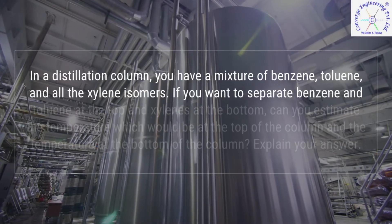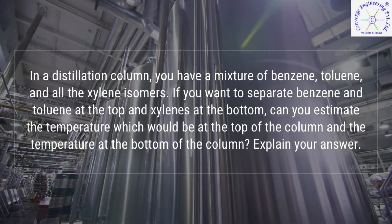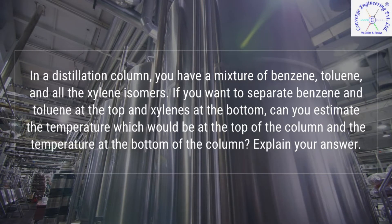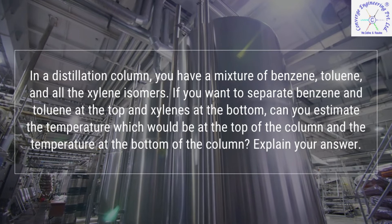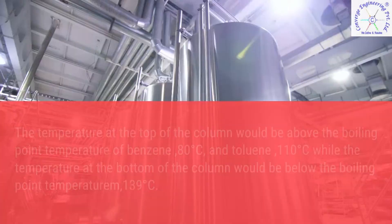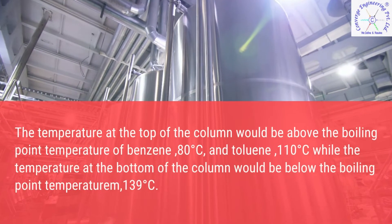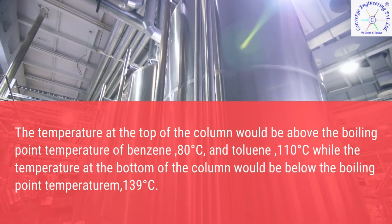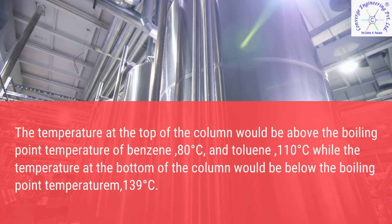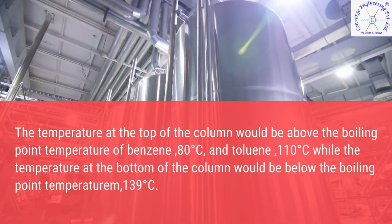In a distillation column, you have a mixture of benzene, toluene, and all the xylene isomers. If you want to separate benzene and toluene at the top and xylenes at the bottom, can you estimate the temperature at the top and bottom of the column? The temperature at the top of the column would be above the boiling point of benzene, 80°C, and toluene, 110°C, while the temperature at the bottom would be below the boiling point of xylene, 139°C.